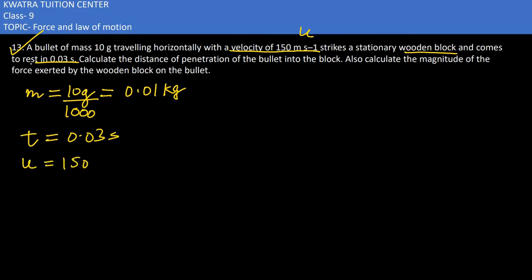U is there, 150, and final velocity we can understand that it is coming to rest. So obviously V would be 0. So I need to find the distance of penetration of the bullet into the block and we need to find the force.